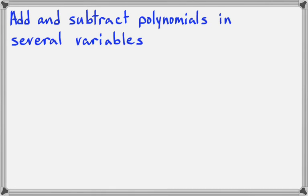In this lesson we're going to add and subtract polynomials in several variables. You may remember from an earlier lesson when we added and subtracted polynomials, it really just amounted to combining our like terms. The only difference here is that we will have two variables in each polynomial to deal with.